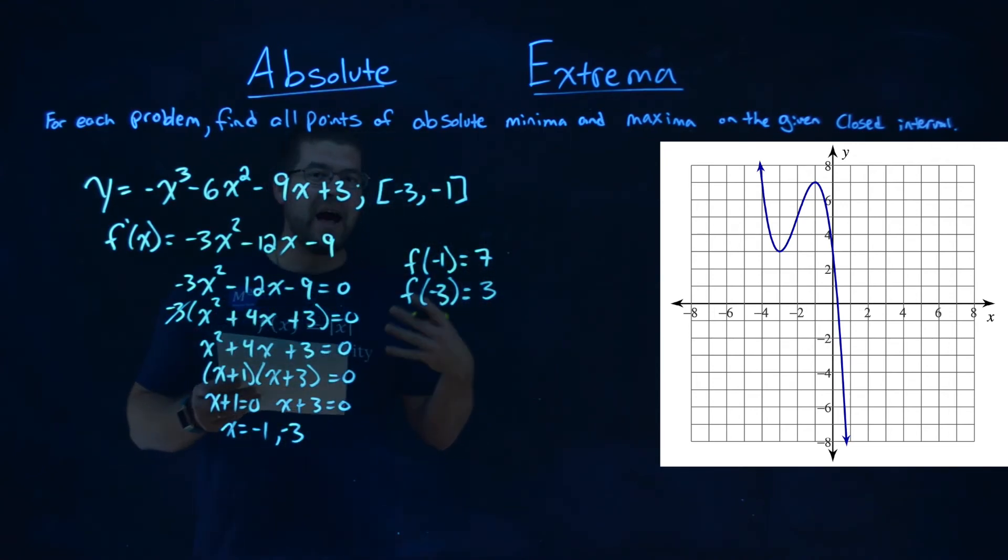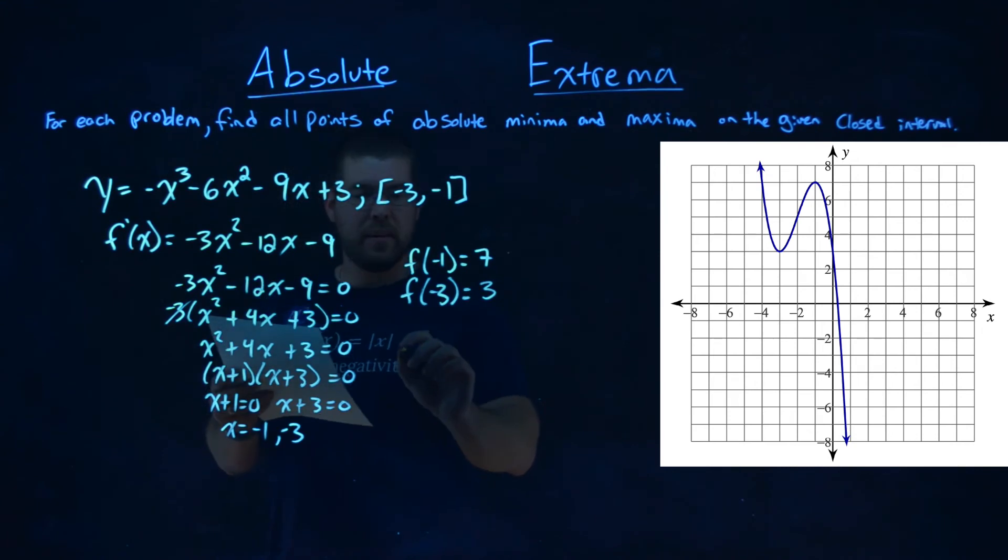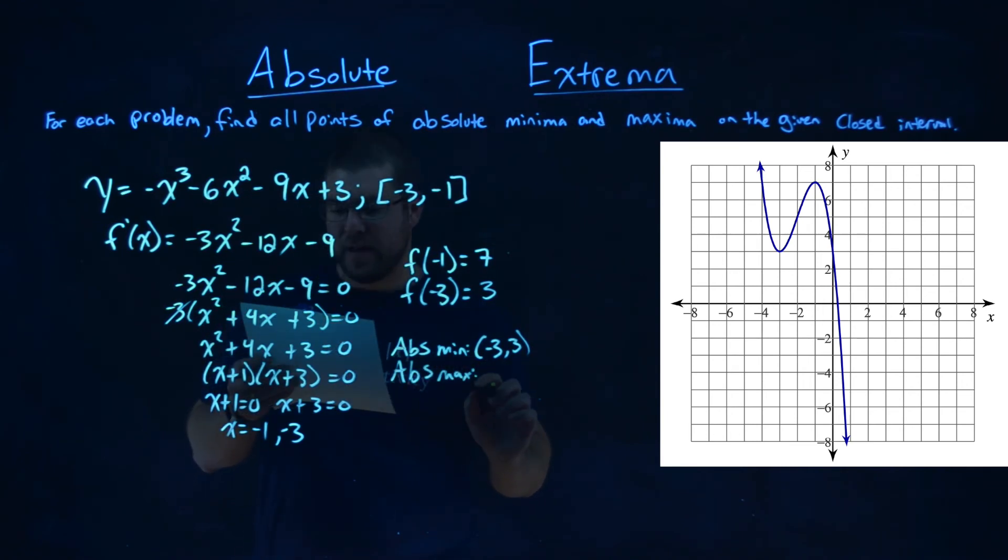And so, these are our absolute minimums and maximums. Our absolute minimum is the coordinate point negative 3 comma 3, it's the lesser of the 2, the less y value, and the absolute maximum is that coordinate point negative 1 comma 7.